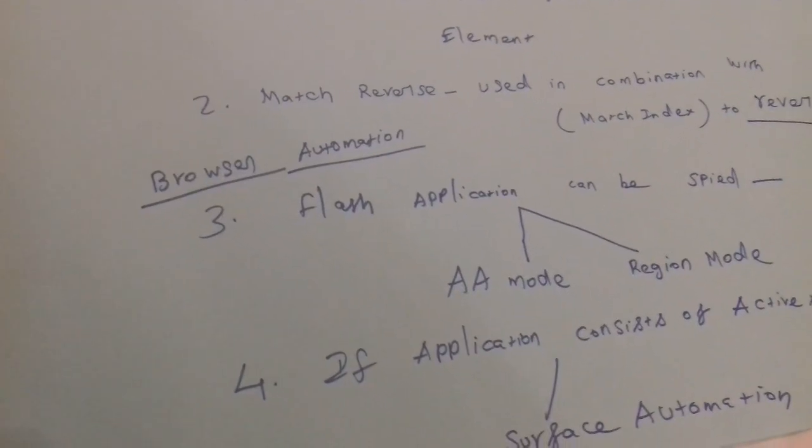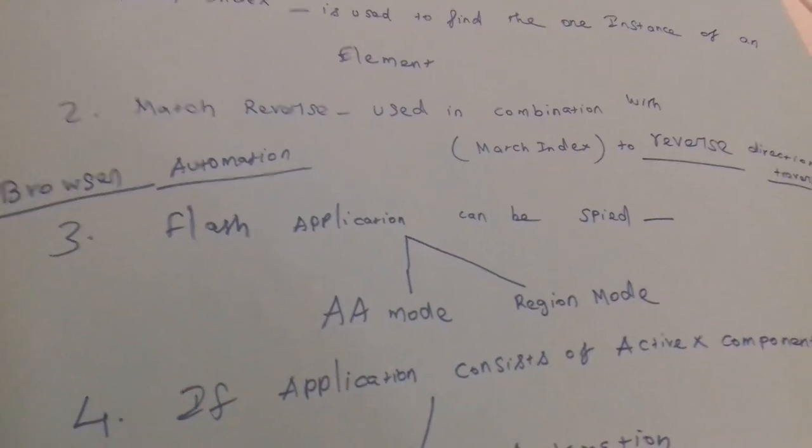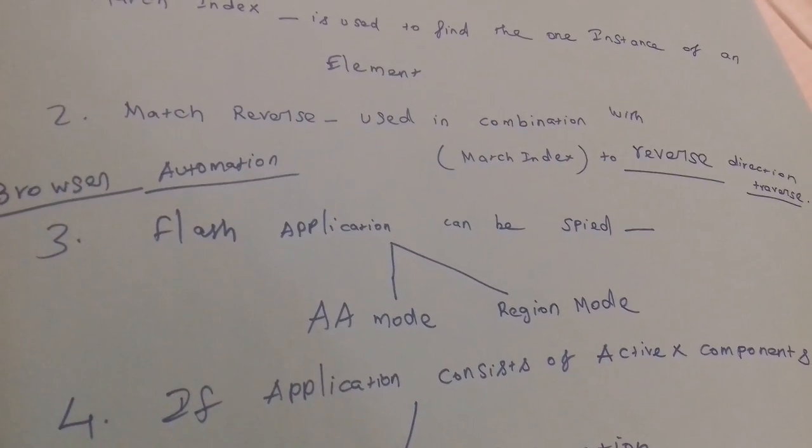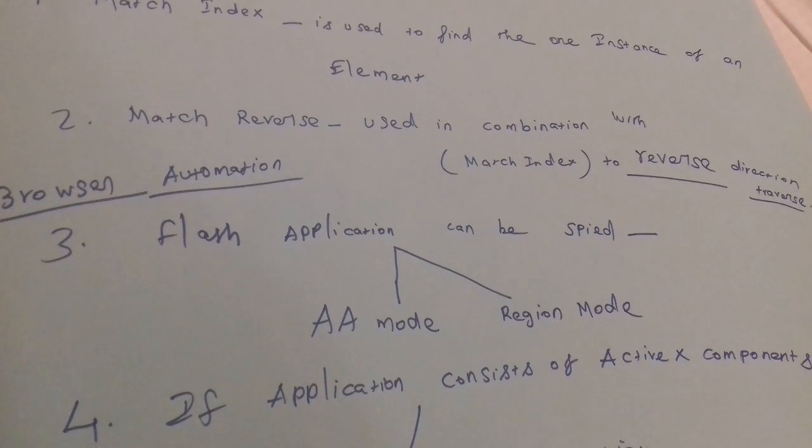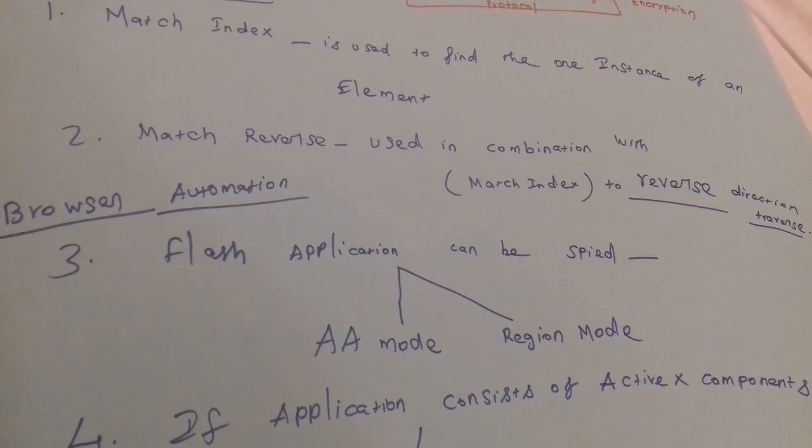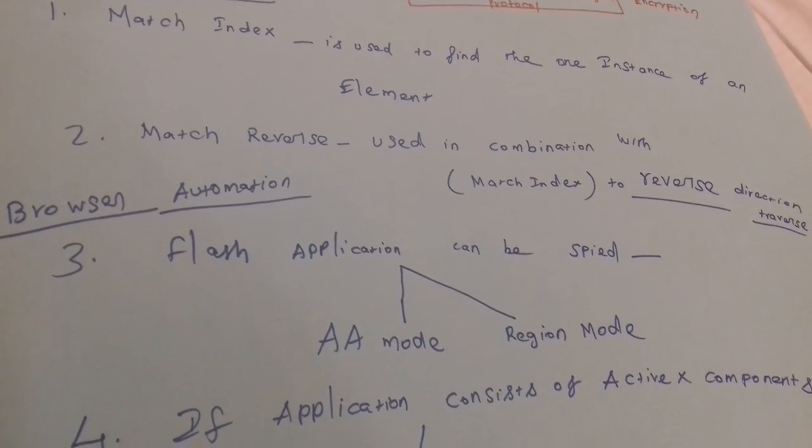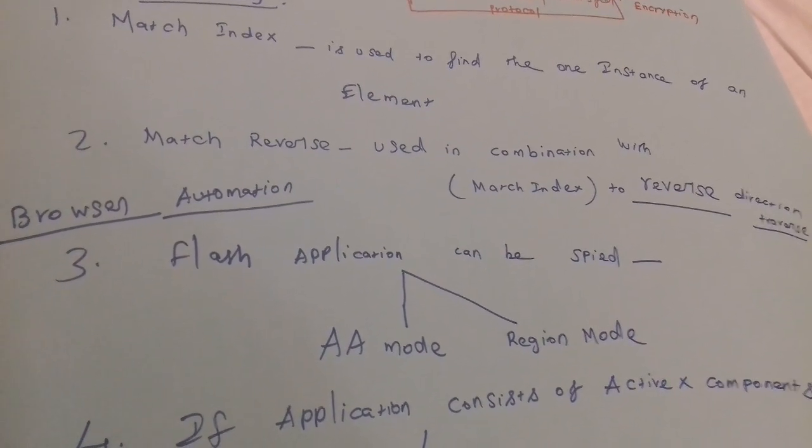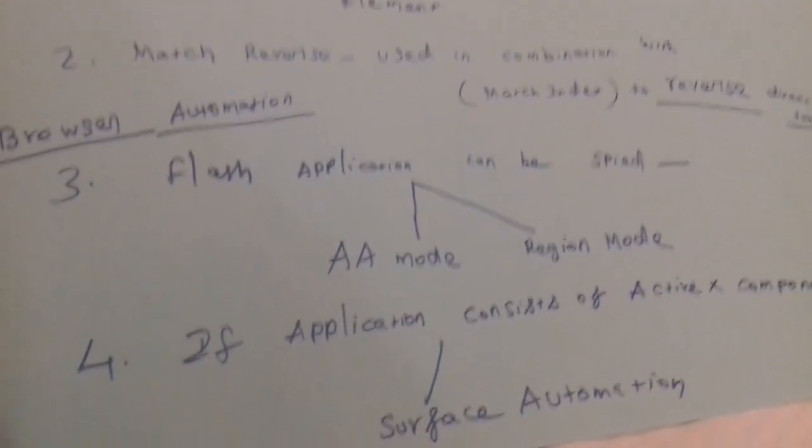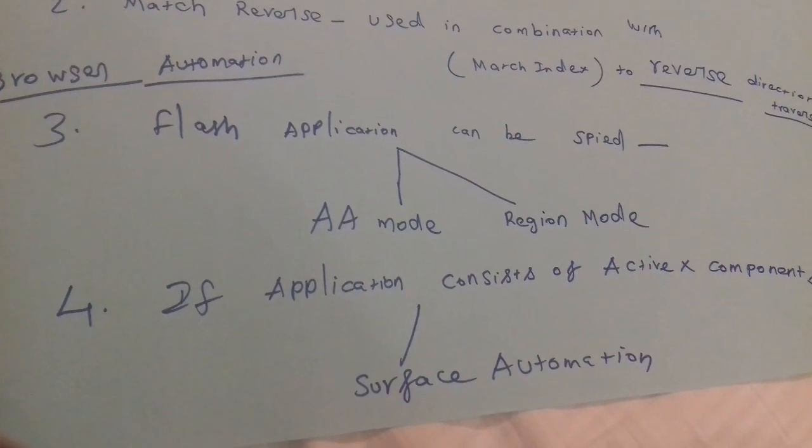When you go for browser automation, if you're working with a Flash application, first you have to keep in mind you should go with AA mode, or else the second level is Region mode. That is for Flash application or Silverlight application.